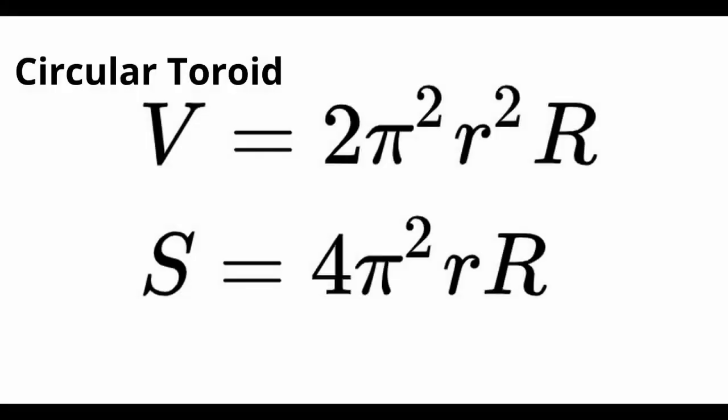Circular toroid: The volume V and surface area S of a toroid are given by the following equations, where small r is the radius of the circular section, and R is the radius of the overall shape.